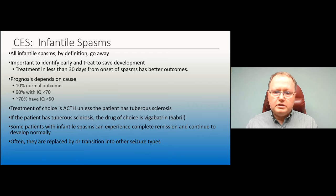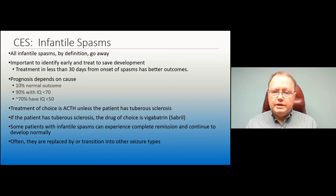Some patients with infantile spasms will experience complete remission and never have another seizure with normal development. Often, however, these will transition to other seizure types — most commonly Lennox-Gastaut syndrome.